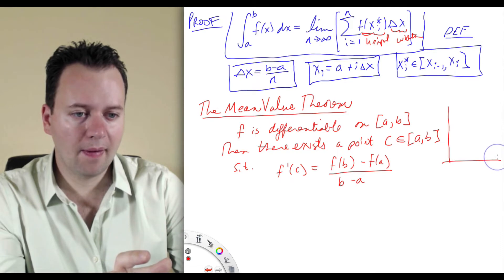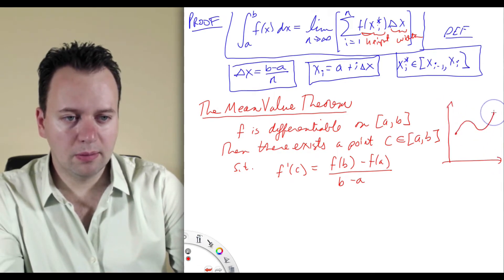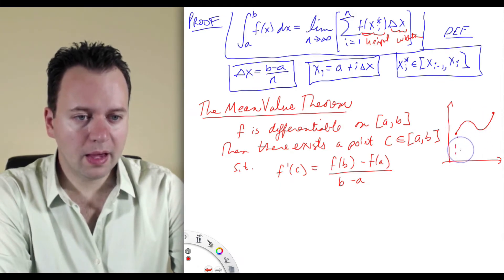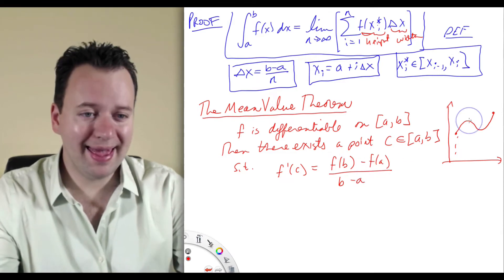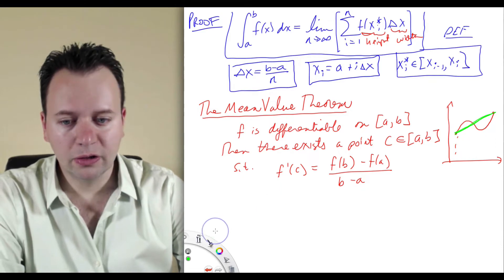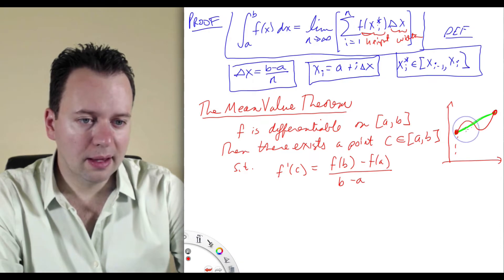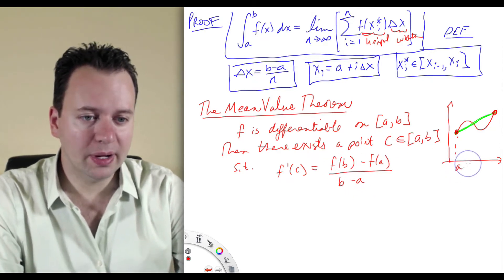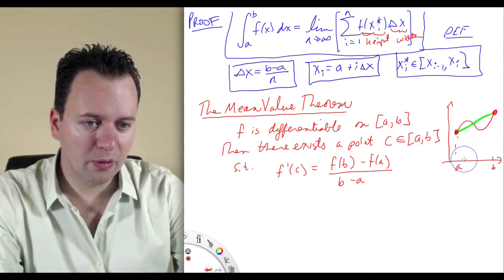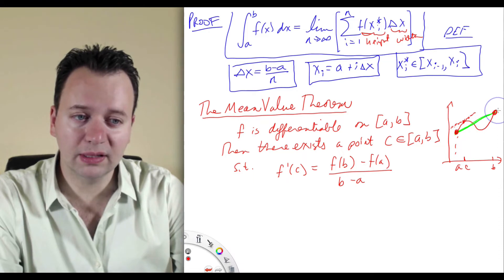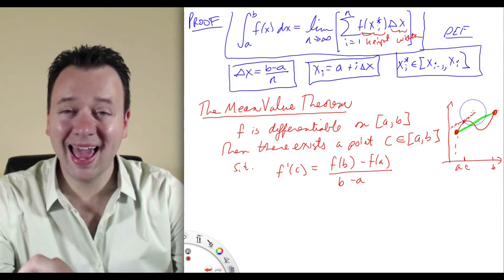It says that if you have a function between two points and it's differentiable — so there are no kinks, no corners — it will always be a nice smooth curve. The right-hand side here is the average rate of change of the function between a and b, which is the slope of the line connecting those two endpoints. If I connect the two endpoints with a straight line, the slope of this line equals f of b minus f of a over b minus a. What this is saying is that there is some point c between a and b such that the derivative at c — the slope of the tangent line — is equal to the slope of that line. At some point on the interval, the instantaneous rate of change has to equal the average rate of change.